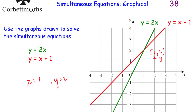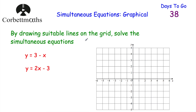Let's have a look at another question. This time we've been asked to draw suitable lines on this grid to solve the simultaneous equations y equals 3 minus x and y equals 2x minus 3. So let's draw these graphs first, and then see where they intersect.